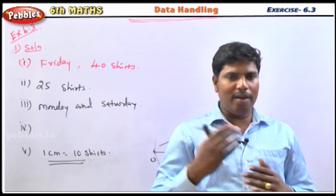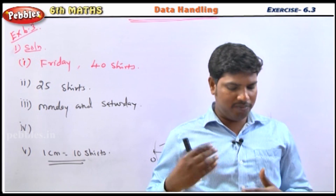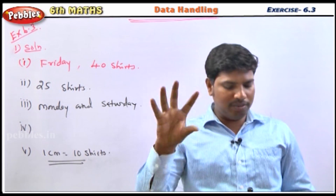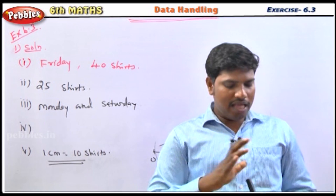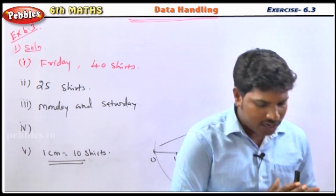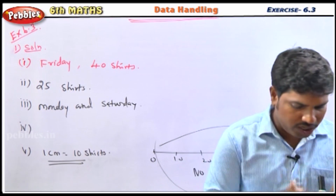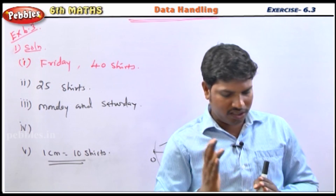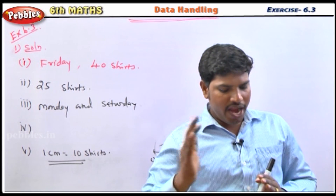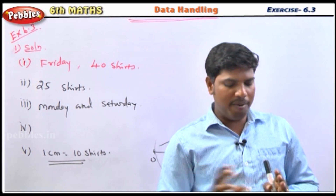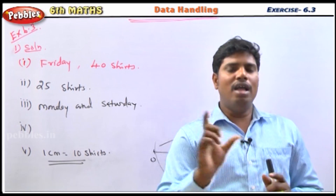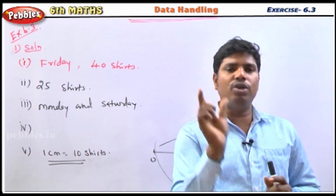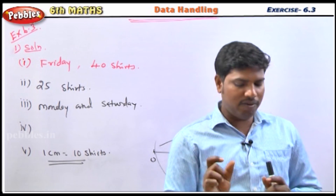Now the next problem. Subjects are Tamil, English, Math, Science, and Social Science. The units on the scale go from 0 to 20, 20 to 40, 40 to 60, 60 to 80, 80 to 100. The horizontal line represents 1 cm equal to 20 marks.